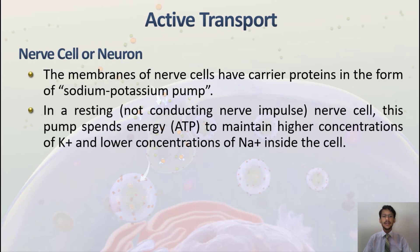In a resting nerve cell, this pump spends energy to maintain a higher concentration of potassium and a lower concentration of sodium inside the cell. When nerve cells are not sending messages to the brain, the sodium-potassium pump utilizes the energy of ATP to maintain the concentration of sodium and potassium ions inside and outside the cell.